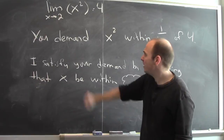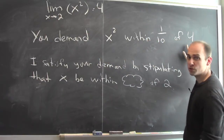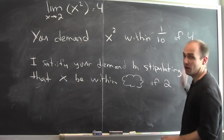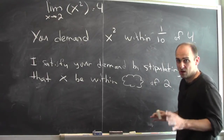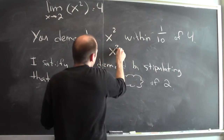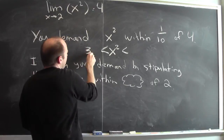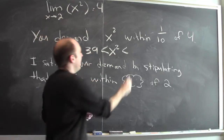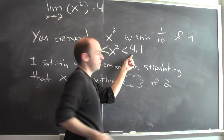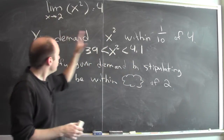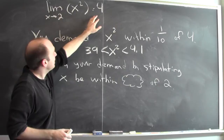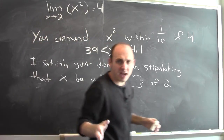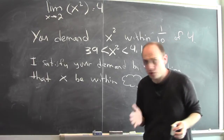You're going to make some sort of demand — you're going to demand that x squared be close to 4. Maybe you're going to demand that x squared be within a tenth of 4. That means you're asking that x squared be between 3.9, which is a tenth less than 4, and 4.1, which is a tenth more than 4. So you're going to make some demand that the output be close to 4, and I have to satisfy that demand by making x sufficiently close to 2.